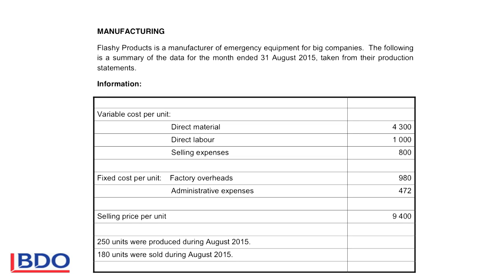If we look at the number of units, you see that we produce more units than were sold. So that means that we've got 70 units left over and we must take that into account, because either you will have to reduce your production or you will have to do something to sell more units. Otherwise, you will sit with a lot of inventory in the end.